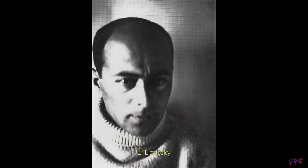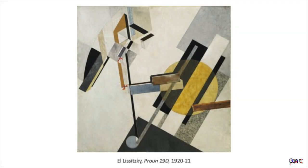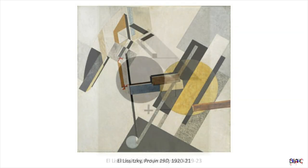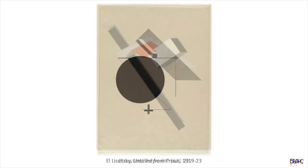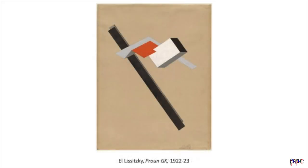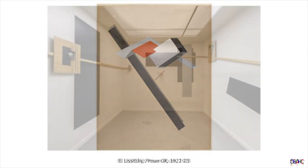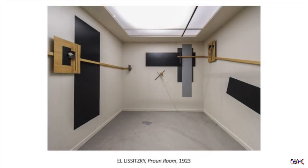Following his teacher Kazimir Malevich's ideas that art should express the supremacy of pure artistic feeling, an artist known as El Lissitzky created a type of art he called Proun. Lissitzky's theories eventually took three-dimensional form in his Proun Room.